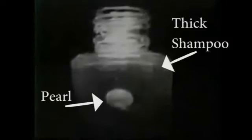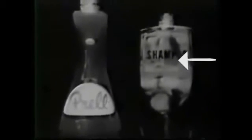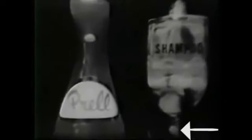Let's see how a drastic difference in fluid density affects terminal velocity. Here, a pearl is dropped through two fluids of differing densities — a thick and a thin shampoo. Notice the different velocities through each fluid.